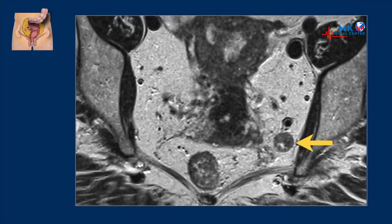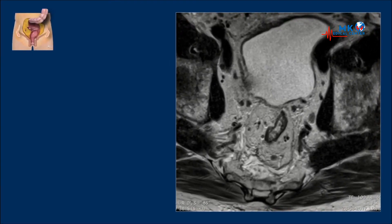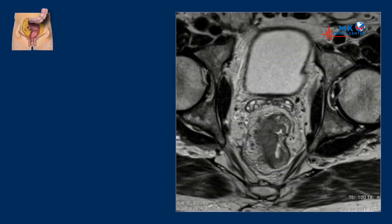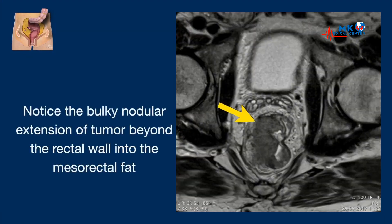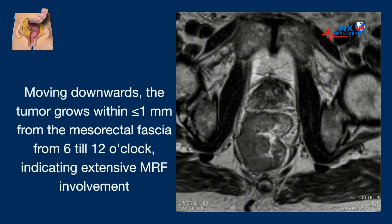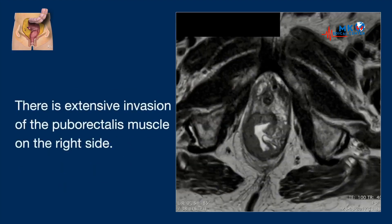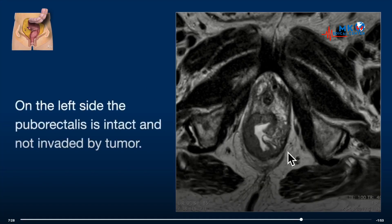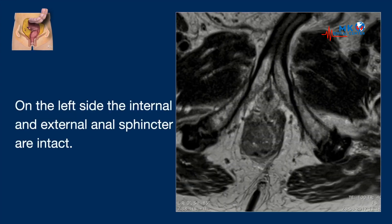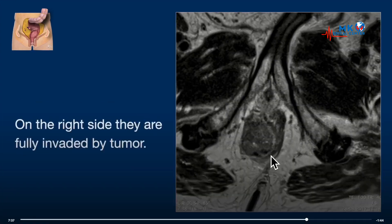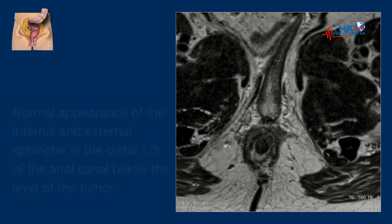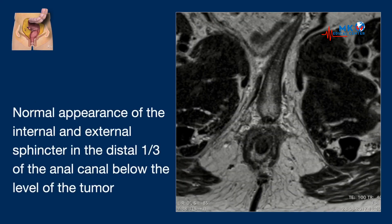Back to our case — let's continue with the axial slides and go to the pelvic floor and the anal sphincter. Notice the bulky nodular extension of the tumor beyond the rectal wall into the mesorectal fat. Moving downwards, the tumor grows within less than 1 mm from the mesorectal fascia from 6 till 12 o'clock. There is extensive invasion of the puborectalis muscle on the right side, while on the left side it is intact. On the left side the internal and external anal sphincter are intact, while on the right side they are invaded with tumor. Just like in the coronal images, there is a normal appearance of the internal and external sphincter of the distal third of the anal canal below the level of the tumor.